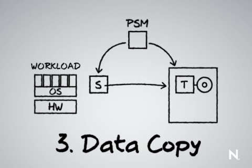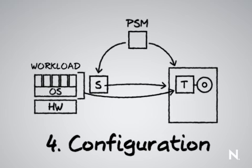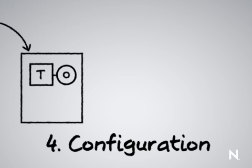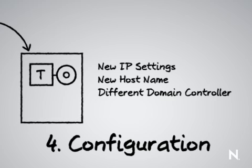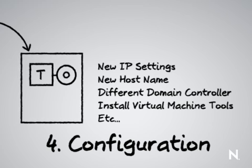Once the entire workload data has made its way across the wire and is sitting properly in the target VM, there's a bit of configuration run to make sure it will boot properly in its new environment. Lastly, we perform configuration of the target machine. This final configuration step gives the user different options when setting up the job — the server may need new IP settings on a new VLAN, a new hostname, a connection to a different domain controller, or virtual machine tools installed. PlateSpin Migrate automates these steps if the user configures them in the job, and at this last step, ensures those post-migration steps are properly executed.